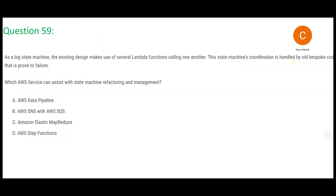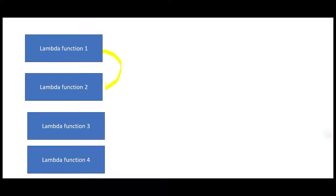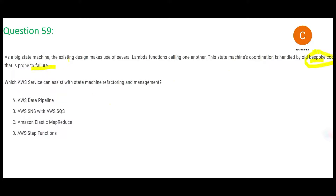In this question, you have various Lambda functions that can call each other, and this is handled by old bespoke code that is prone to failure. For example, Lambda 2 runs after Lambda 1, but this piece sometimes fails. We want an AWS service for this purpose. Looking at the options, only one service fits: Step Functions. The remaining three are not relevant.